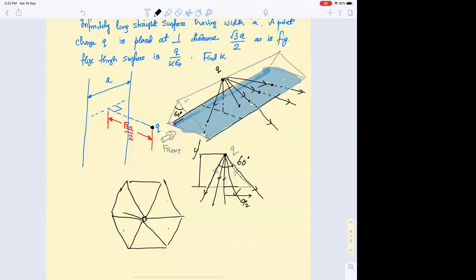With the hexagon, all the flux will pass through the flat surfaces at the ends of these infinitely long strips. Through this blue surface shown, the total flux is q/ε₀. Obviously, one-sixth will pass through each surface, so the answer is q/(6ε₀).